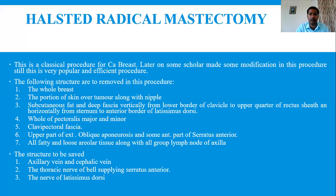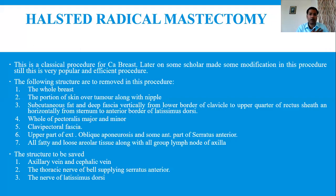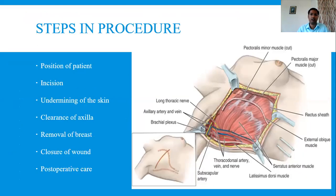The important structures that should be preserved during the procedure: first, always try to save the axillary vein and cephalic vein, which are very important veins to drain venous blood from the upper limbs. The thoracic nerve of Bell, supplying the serratus anterior, must be saved — if injured, Bell's palsy occurs. The nerve to the latissimus dorsi should also be preserved. These are the key nerves and veins to protect.